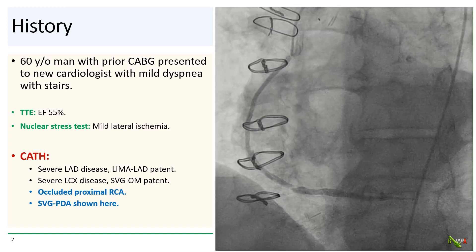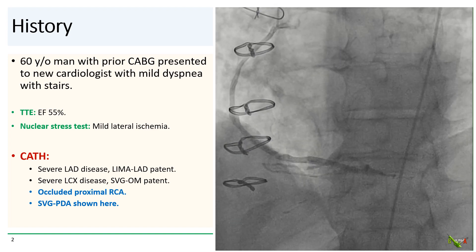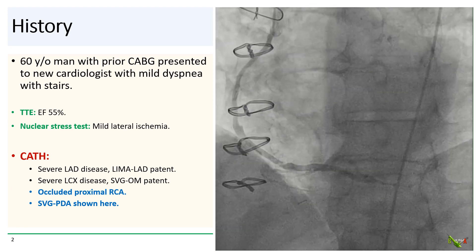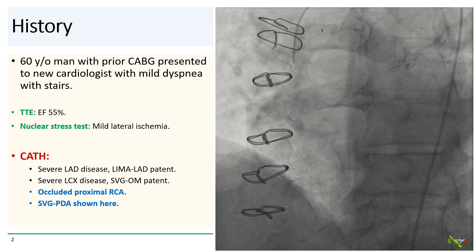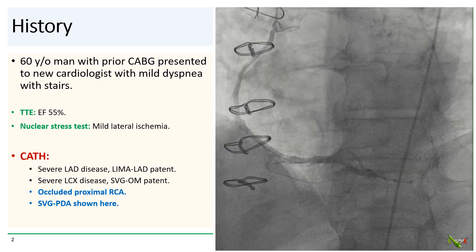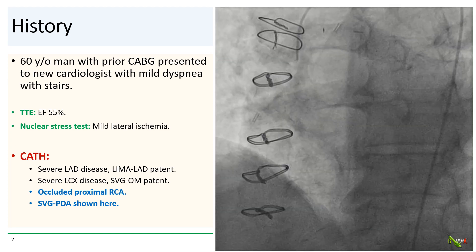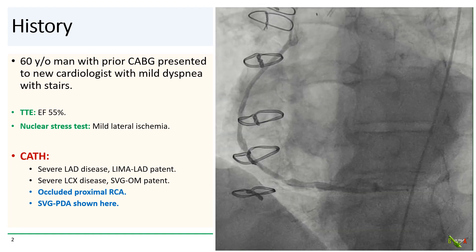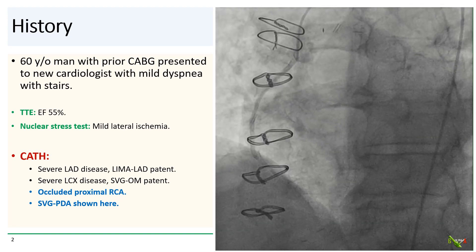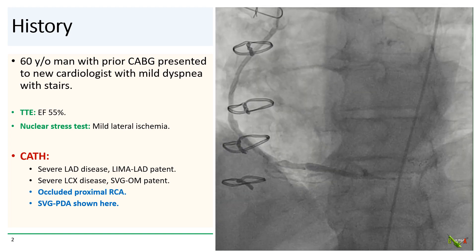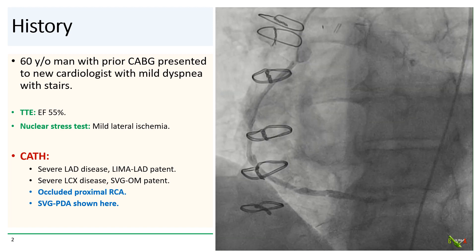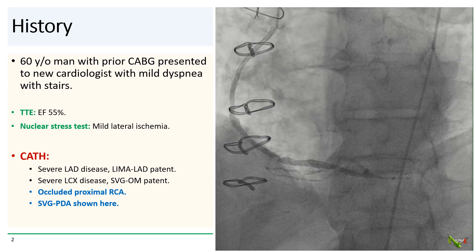The patient is a 60-year-old man with a prior CABG who is new in town. He presented for his first visit to his new cardiologist. He didn't really have any complaints other than perhaps some mild dyspnea with a couple of flights of stairs. He had no chest pain. Echo showed a normal ejection fraction. Nuclear stress testing showed lateral ischemia, so he was referred for cath.